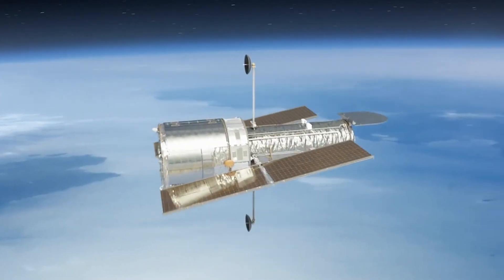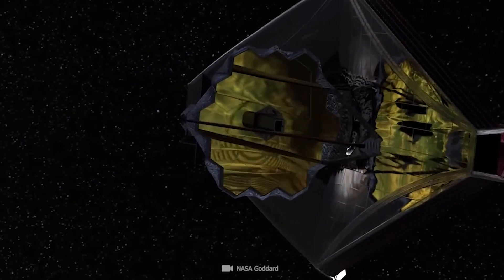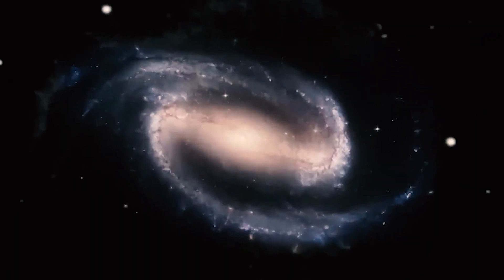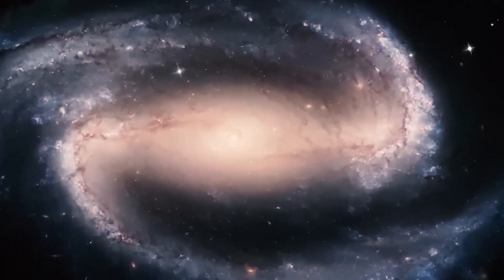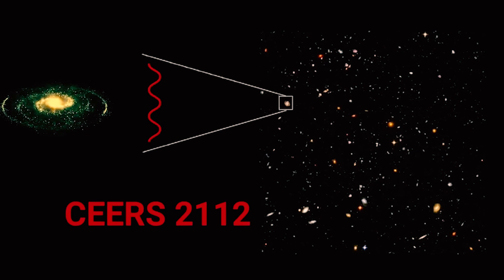Contrary to earlier assumptions from Hubble Space Telescope observations, recent data from the Webb Telescope challenges these notions. The new findings suggest that barred spirals like Sears 2112 may not have been exclusive to recent times in the universe.